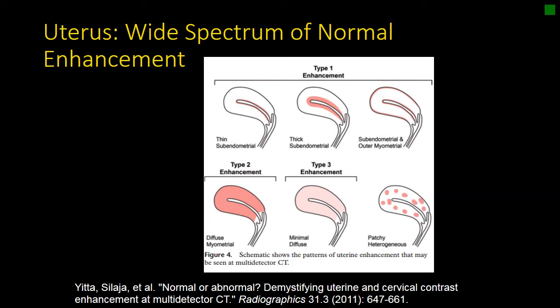One of the challenges with the uterus is the wide spectrum of normal enhancement. Commonly, we will see some degree of subendometrial enhancement or enhancement of the junctional zone that differentiates the junctional zone from the myometrium. But in other cases, you'll see diffuse enhancement of the uterus, such as described with type 2 enhancement. Other times, you have minimal or no enhancement of the uterus, and we can even see a very patchy or heterogeneous enhancement pattern.